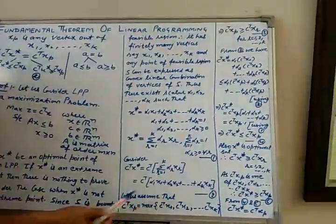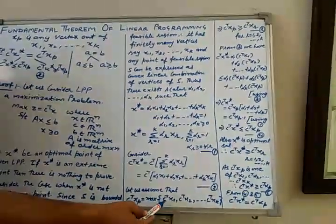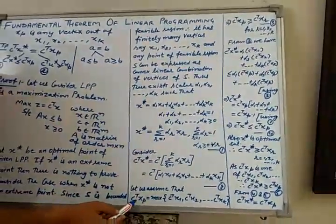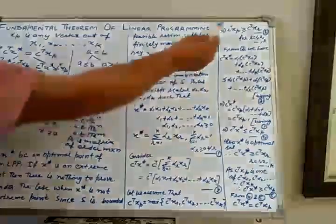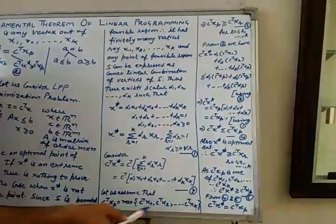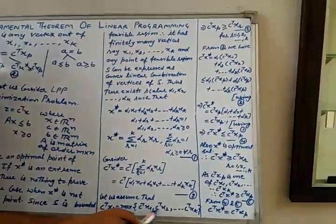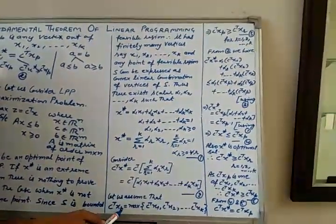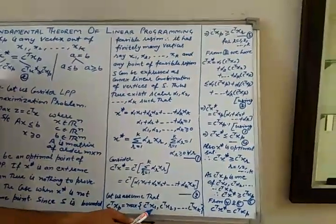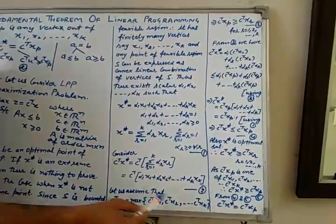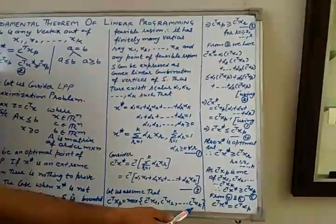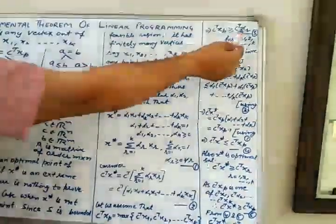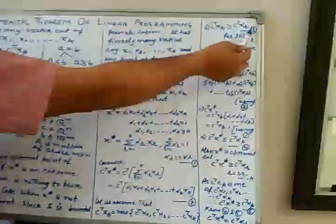Now assume C^T Xp is the maximum of {C^T X1, C^T X2, ..., C^T Xk}. Therefore C^T Xp ≥ C^T Xr for all r from 1 to k. That is: C^T Xp ≥ C^T X1, C^T Xp ≥ C^T X2, ..., C^T Xp ≥ C^T Xk. In combined form: C^T Xp ≥ C^T Xr for r = 1 to k. Call this equation (3).